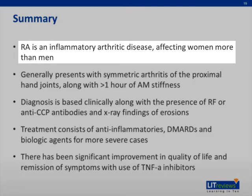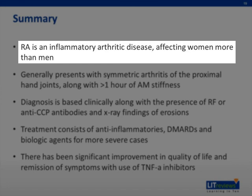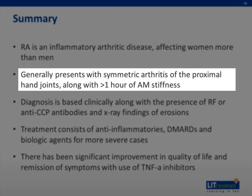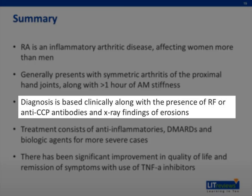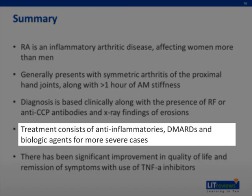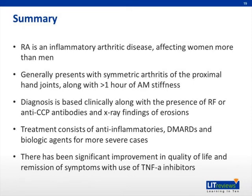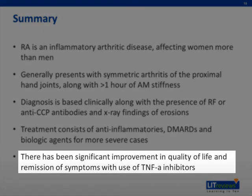In summary, rheumatoid arthritis is an inflammatory arthritic disease affecting women more than men that presents with symmetric arthritis of the proximal hand joints, along with one hour or greater of AM stiffness. Diagnosis is made based on clinical symptoms along with the presence of rheumatoid factor or anti-CCP antibodies, elevated inflammatory markers, and x-ray findings of erosions. Treatment consists of anti-inflammatories, DMARDs, and biologic agents for more severe cases. Finally, the focus on early aggressive treatment, as well as newer therapeutics, has led to significant improvement in quality of life and remission of symptoms in the treatment of RA.